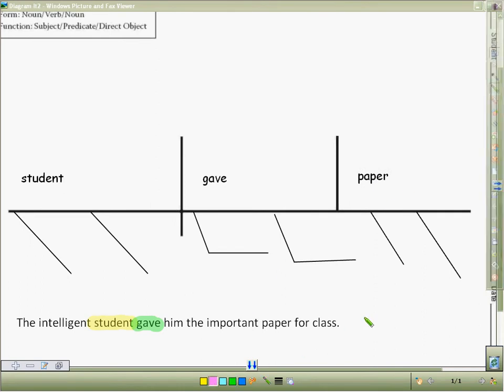The fourth question that we ask is to whom or what? To whom or what did the student give the paper? He gave it to him, which is the indirect object.